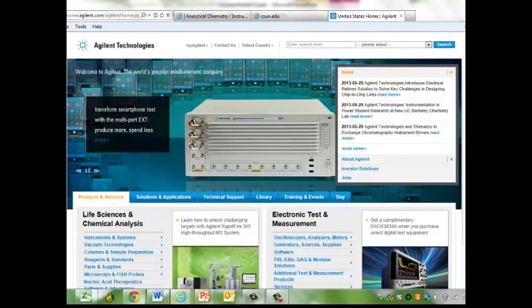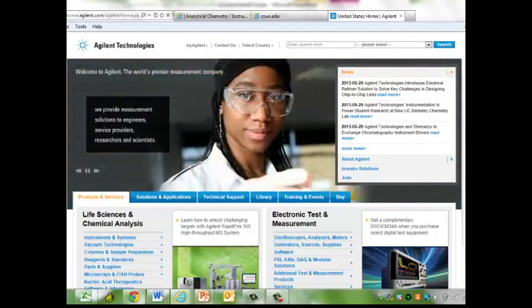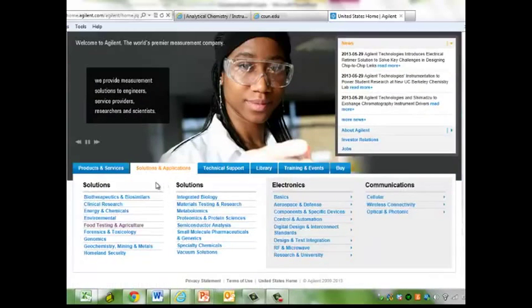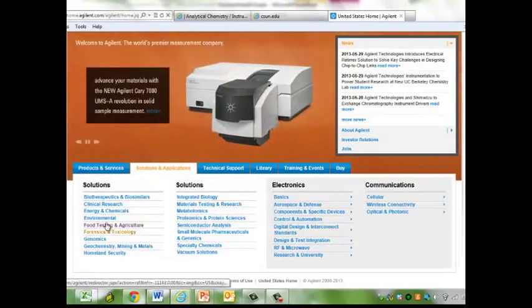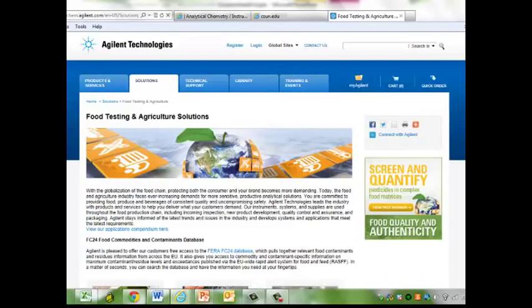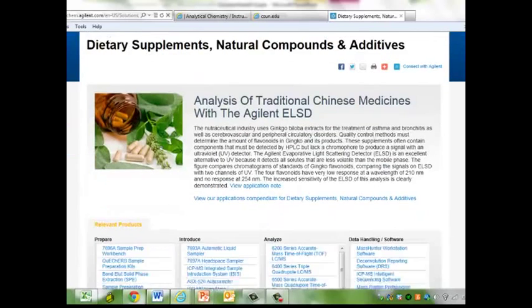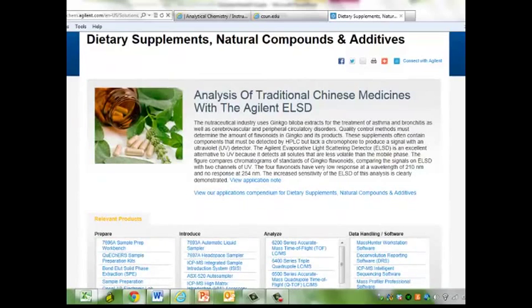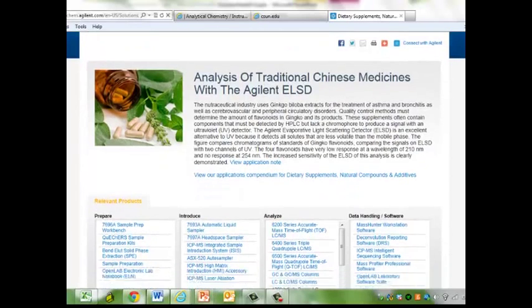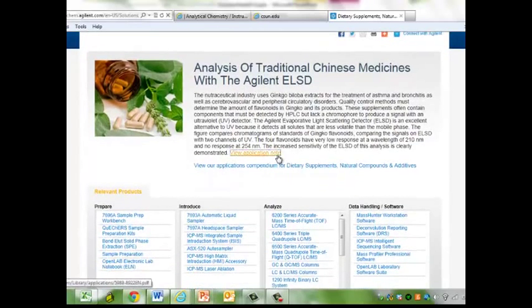This is a website of Agilent, which is one of the biggest manufacturers of a lot of different instrumentation, but in particular chromatography. I like their website because it has good applications notes that you might find interesting in this class. So what you're going to do once you're at the website is you can see that there's a lot of different examples of solutions and applications. You can pick whatever is most interesting to you. I like to do food chemistry, so I'm going to pick food testing and agriculture.